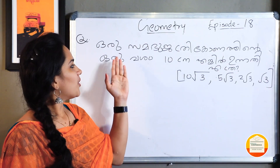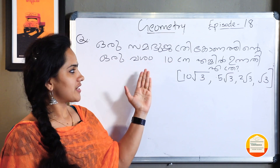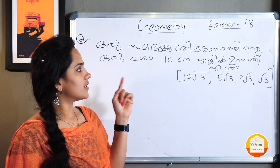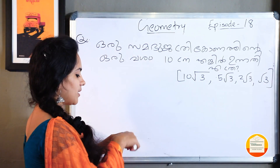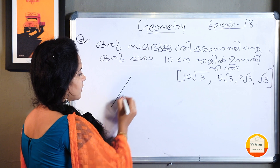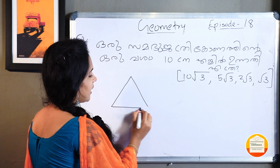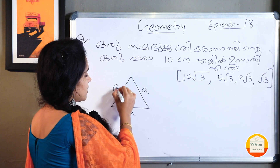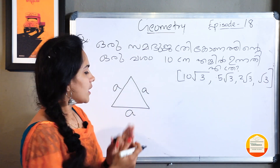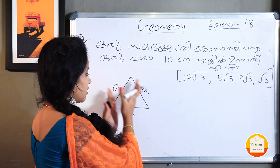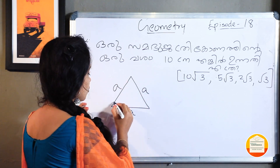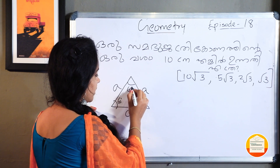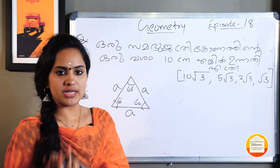One samabuja trigonath (equilateral triangle) has a side of 10 cm. In samabuja trigonath all sides are equal — 1, 2, 3 sides. In samabuja trigonath all angles are 60 degrees, 60 degrees, 60 degrees, totalling 180 degrees.